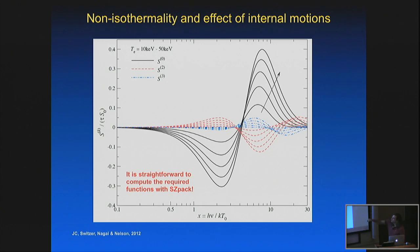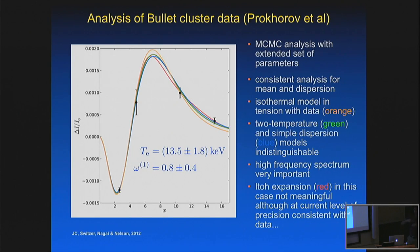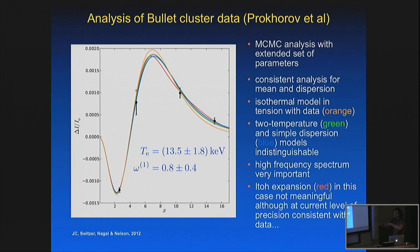For the bullet cluster, with actual measurements shown, the single temperature model (orange) fails to hit the points at high frequencies. The two-temperature case (green) and the simple temperature dispersion model fit better. The E2 asymptotic expansion (red) does not apply anymore at this high temperature — the signal shape is completely wrong. This shows that when you want to distinguish models in detail, you need to cover in particular the high-frequency part of the SZ effect. There are challenges with dust, but one can hope in the future to learn about the temperature dispersion and intrinsic structure of clusters.